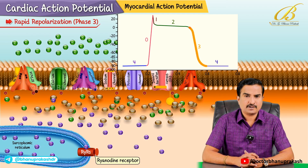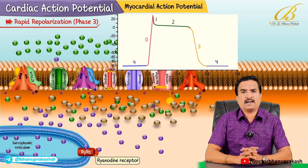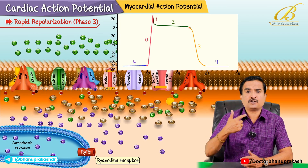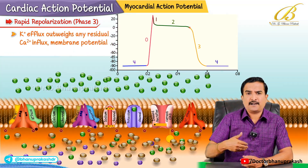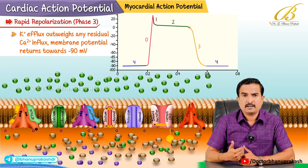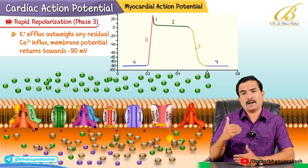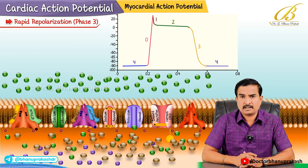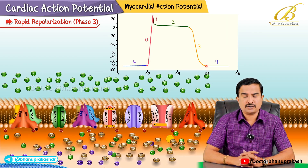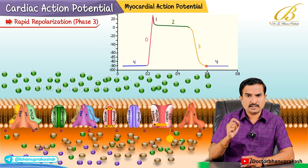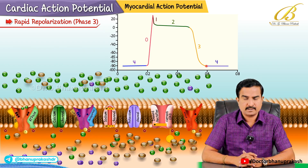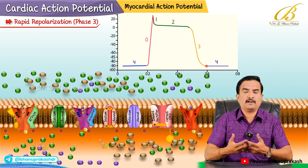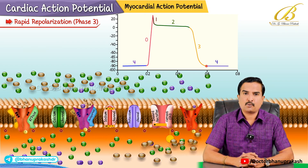Now coming to phase 3, called rapid repolarization. Eventually the L-type calcium channels close, and the delayed rectifier potassium channels continue to move potassium out of the cells. As potassium efflux outweighs any residual calcium influx, the membrane potential returns towards the resting level of about minus 90 millivolts. During this phase, ion pumps and exchangers - the sodium-potassium ATPase, the sodium-calcium exchanger, and calcium ATPase - all work to restore normal ionic gradients, ensuring sodium is mostly out of the cell and potassium is mostly inside, readying the cell for the next action potential.